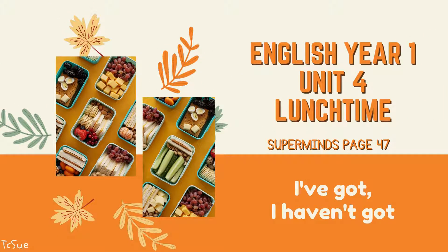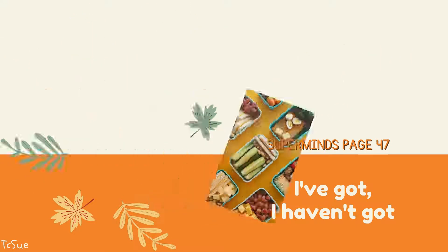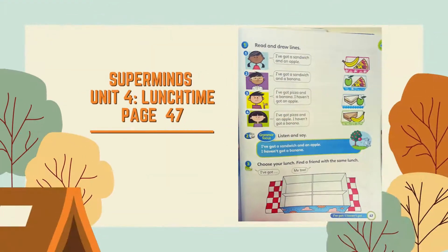Hi, we meet again in English Year 1, Unit 4, Lunchtime. Today, we are going to look at what I've got and I haven't got. Are you ready, kids? You can refer to your Supermind book, Unit 4, Lunchtime, page 47.